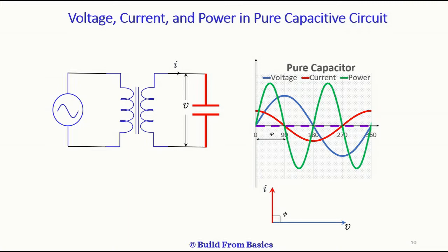But if you look at the average value of this power, it is zero. The purple line is the average value, because it has equal positive and negative half cycles. So the average value of power in a pure capacitor circuit is zero.